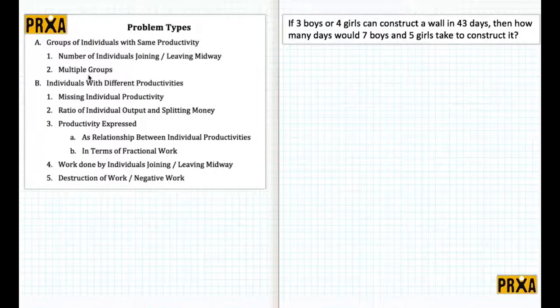In this video we are going to discuss problems related to individuals but belonging to different groups. Let's look at this problem on the right hand side of the screen. It says if three boys or four girls can construct a wall in 43 days, then how many days would seven boys and five girls take to construct it?